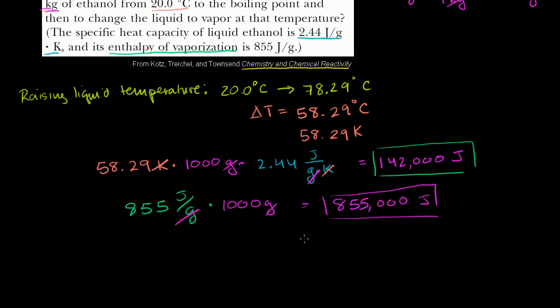800 plus 100 is 900,000. 50 plus 40 is 90. 5 plus 2 is 7. So it's 997,000 joules, or 997 kilojoules. Or we could almost say almost. It's almost 1 megajoule, if we wanted to speak in those terms. But that's what it'll take for us to vaporize that 1 kilogram of ethanol.